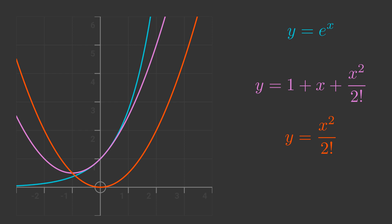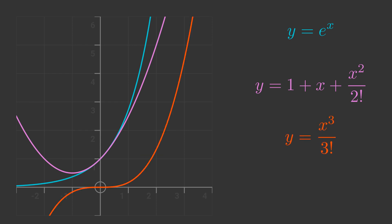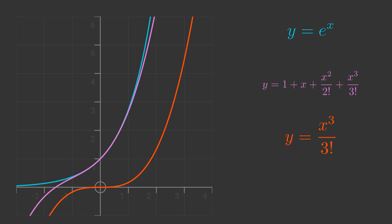The next term in the expansion is y equals x cubed over 3 factorial. Here is the graph of that term. We can now add this term into the approximation. Our approximation now has an extra term, x cubed over 3 factorial. This has the correct value when x is 0, and the first, second, and third derivatives are also exactly correct when x is 0. This is starting to look like a good fit over a limited range of x values — visually it follows the curve reasonably well for x values between minus 1 and plus 1.